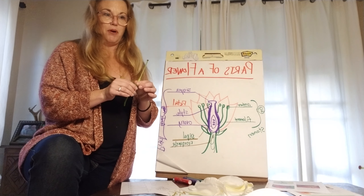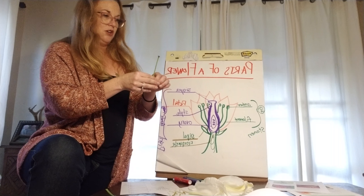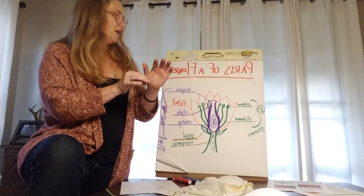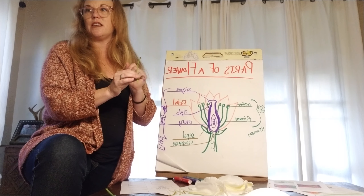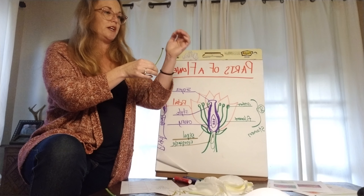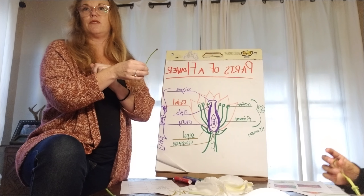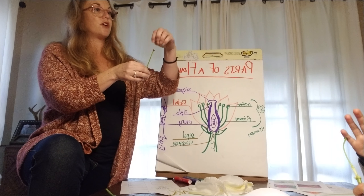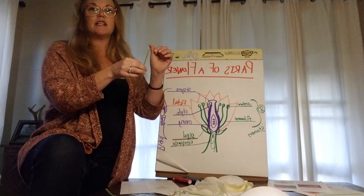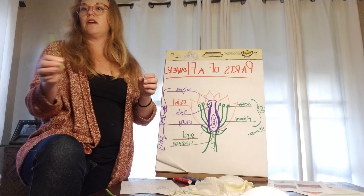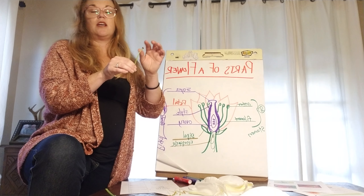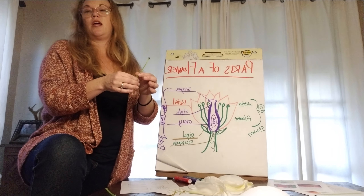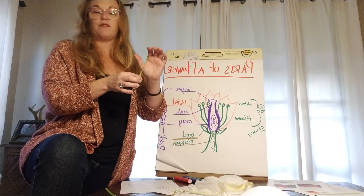Now we have the female part. If you break this off we have this part, and if you touch the top of it, it's kind of sticky, right? Can you feel the top? The stigma — it's kind of sticky. Why is it sticky? What's it trying to get on top of it? Bees are going to come from flower to flower and put pollen on it, so it's sticky because it wants that pollen from the pollinators. Once it happens it's kind of slimy.